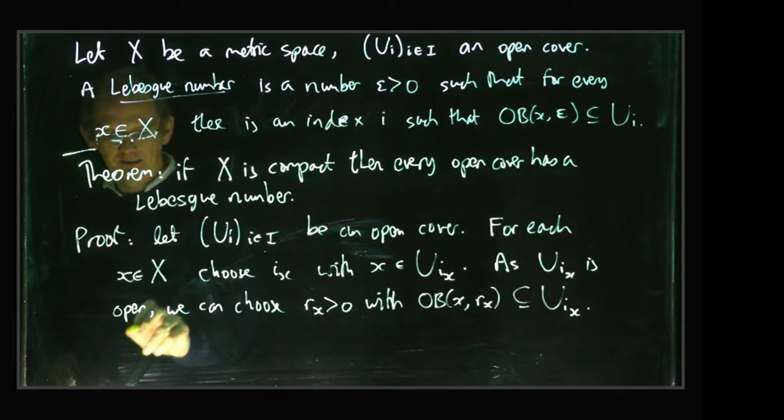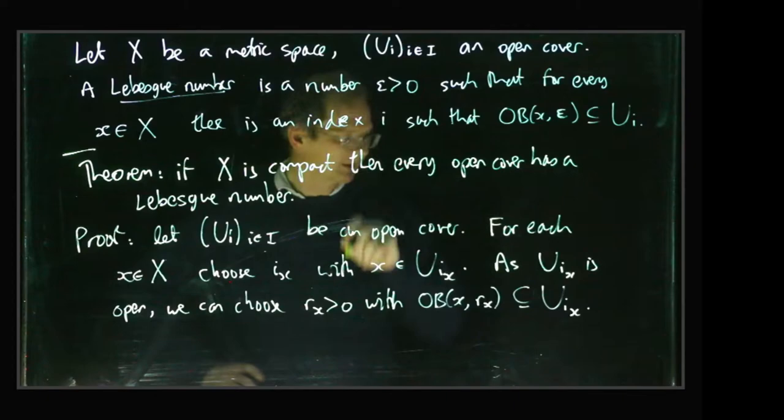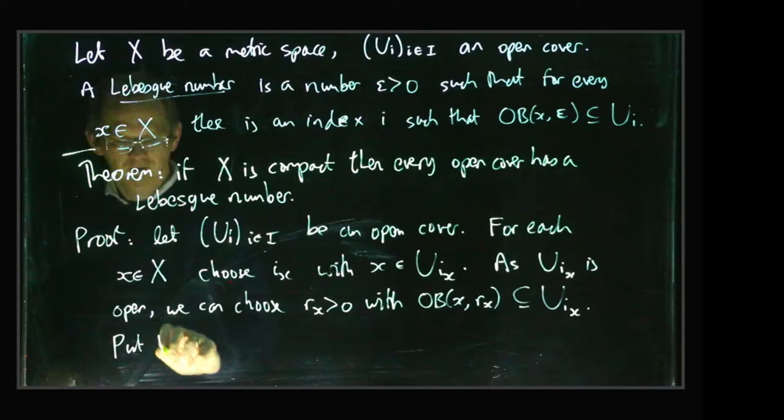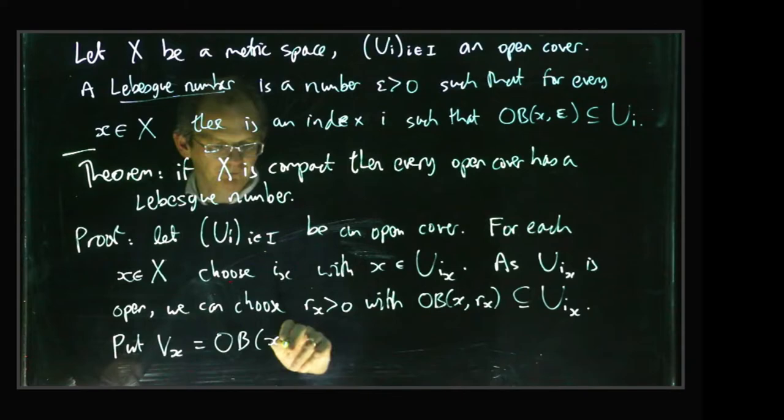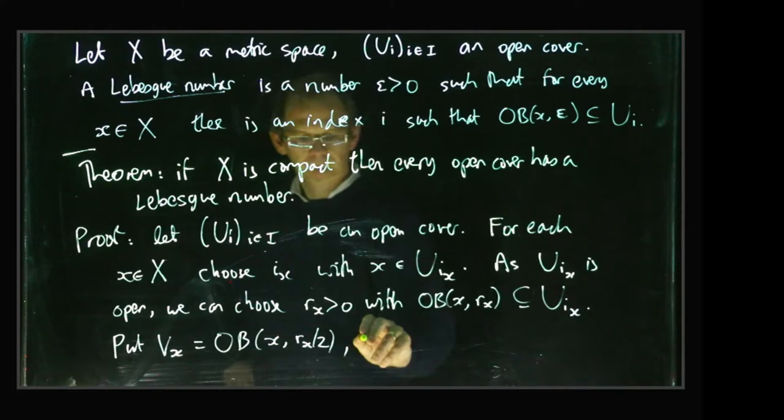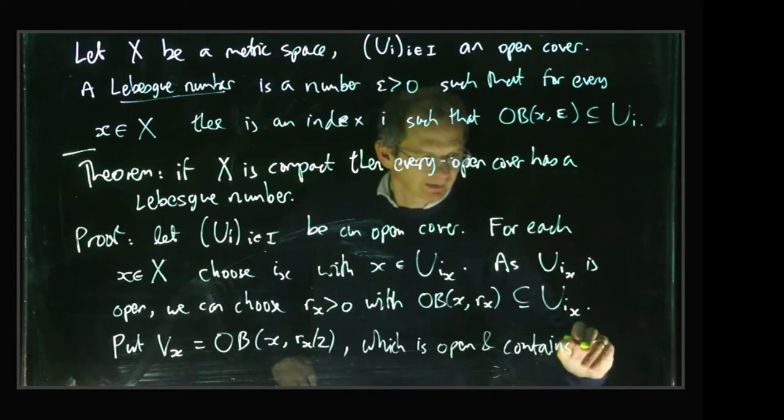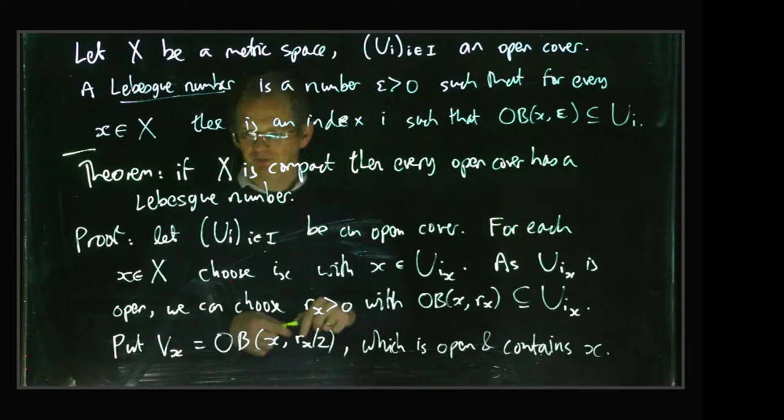All right, now we have to do something a little bit cunning here. Instead of using these open balls, we use the open balls of half the radius. So we put Vx as the open ball around x of radius rx over 2. So that's open and it contains x.